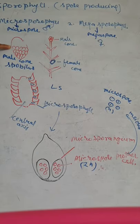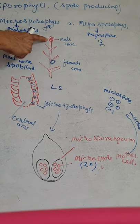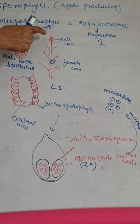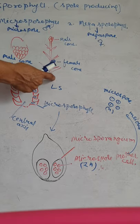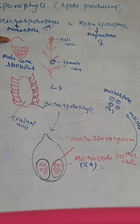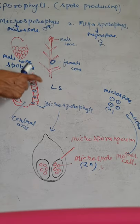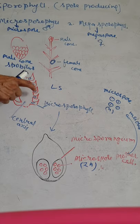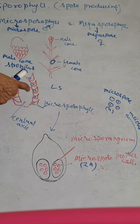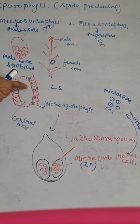The male cone always grows in clusters, at the tip of the long shoot. From outside it appears as a slightly elongated structure. It is hard and woody. This structure is enlarged when examined.